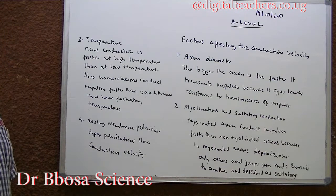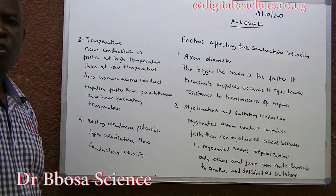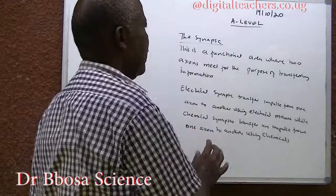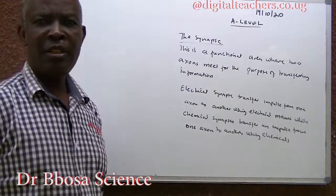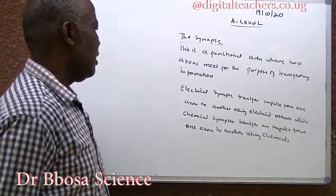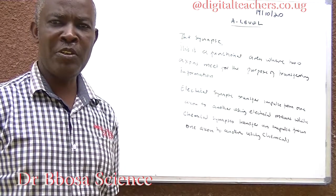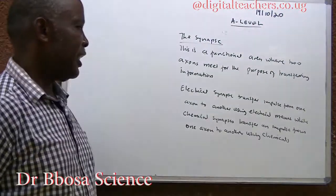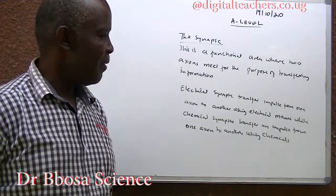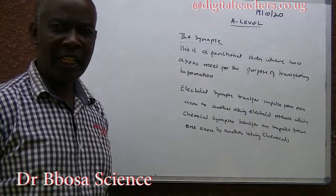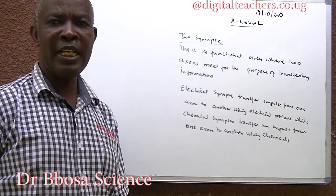Four: resting membrane potential. Hyperpolarization slows conduction velocity. The synapse is a junction area where two axons meet for the purpose of transferring information. Electrical synapses transfer information from one axon to another using electrical means, while chemical synapses transfer impulses from one axon to another using chemical means.